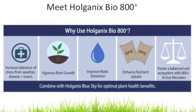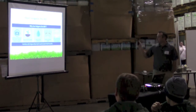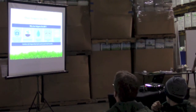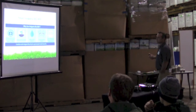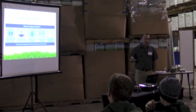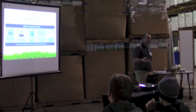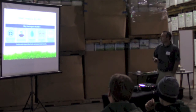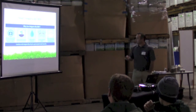Holganix Bio 800 — we've typically just called this Holganix. This was the product that started our product line, and it is basically the Cadillac of what we do. It has all the bells and whistles and is designed to make a fundamental change in the soil ecosystem. Every positive we bring up about what Holganix can do, this product can do it. Key benefits include increased tolerance of stress from weather, disease, and insect pressure.